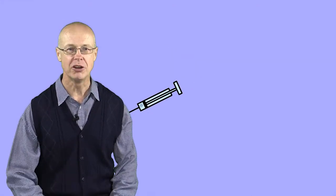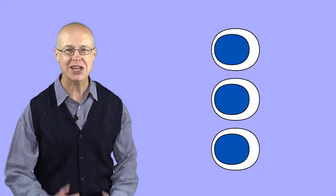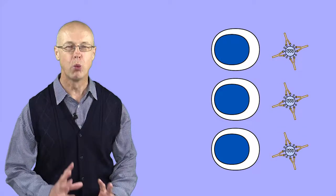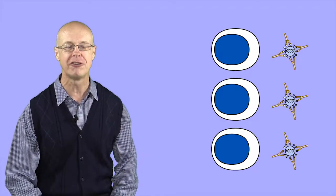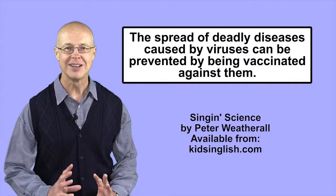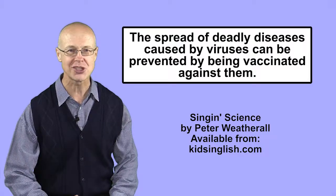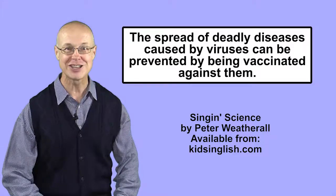We can get an injection of weakened or dead strains of a virus, which prompts our immune system to start producing antibodies that ward off infection by the real virus. This has allowed deadly diseases caused by viruses, such as smallpox and polio, to be largely eradicated.